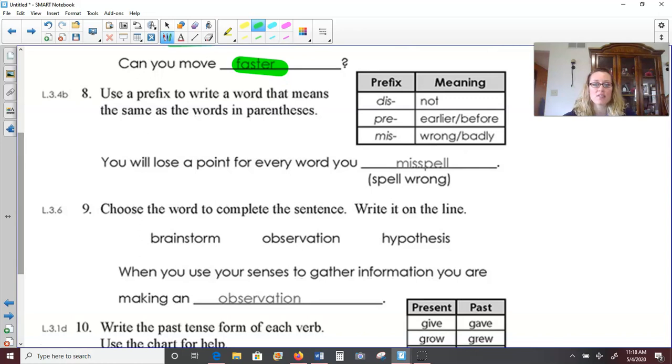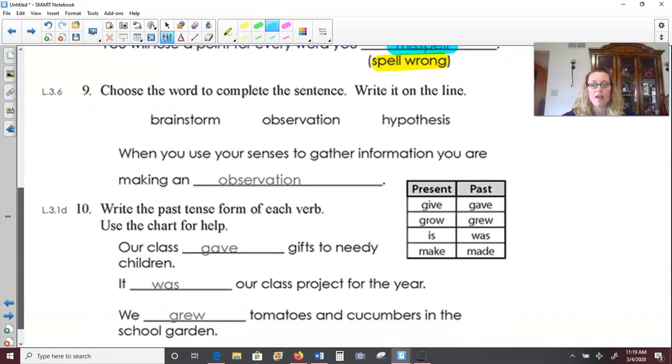Number eight. Using a prefix to write a word that means the same as what's in parentheses. They give us some example prefixes and their meaning up here in this chart if we need it. You will lose a point for every word you spell wrong. So I'm looking up in the prefix chart. I see the meaning wrong matches the prefix miss. So if you are spelling something wrong, we have this as an actual spelling word this year. Misspell. We add the prefix miss and keep the root word spell. Misspell. Don't misspell it as you write it in.